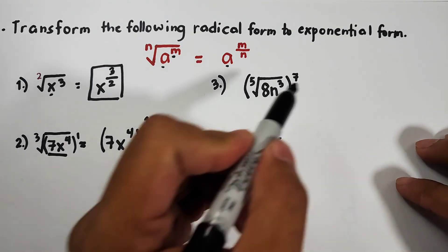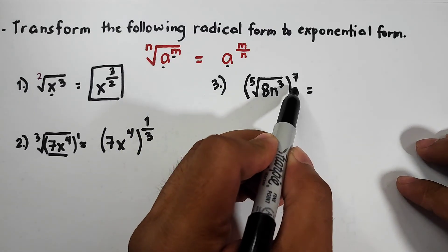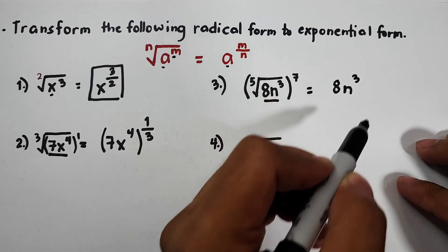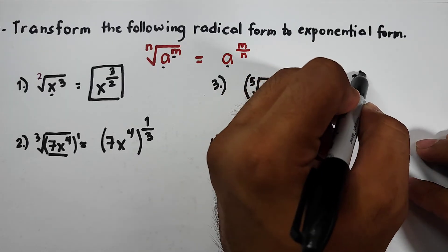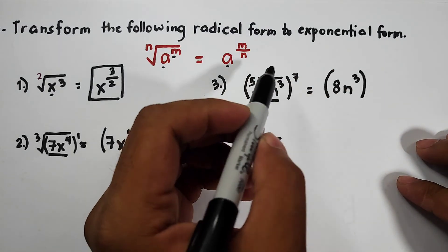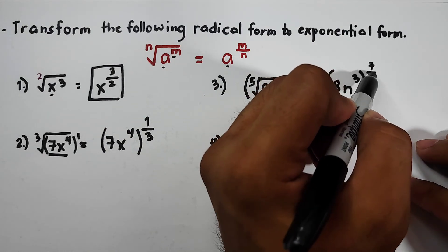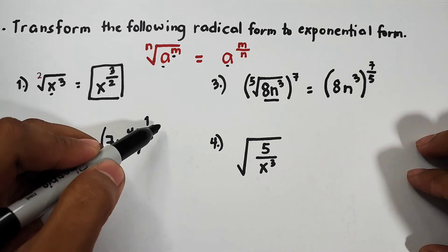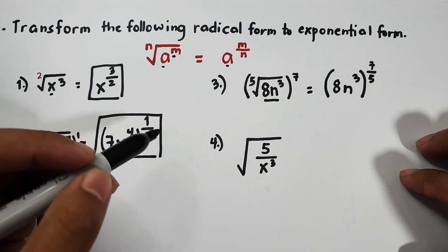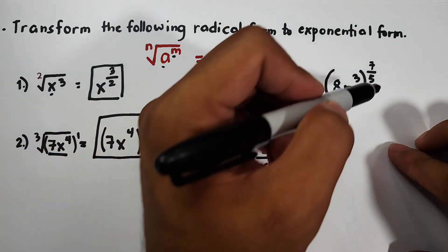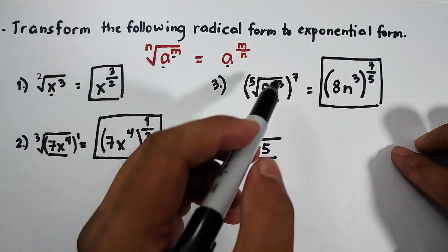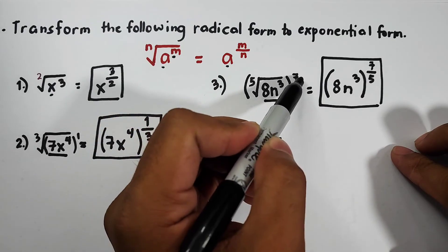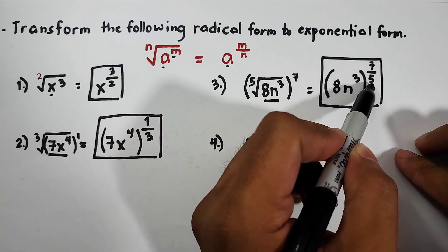For the next example, there is a visible exponent — take 8 raised to the third power, enclosed in parentheses, then raised to 7 over 5. Enclose that in a box as the answer. The base we took is 8 and the cube, enclosed in parentheses so it covers everything, and then 7 is the numerator and the index becomes the denominator.